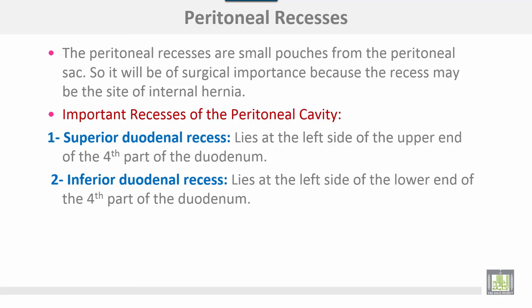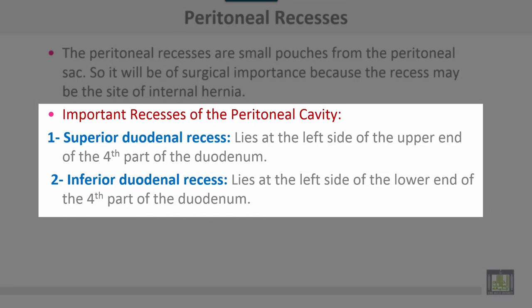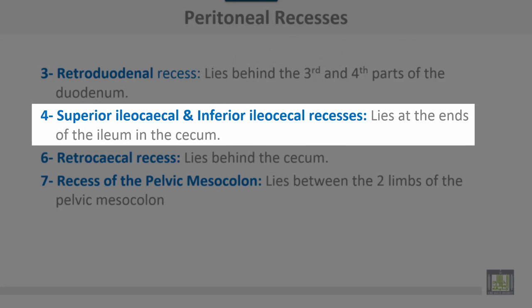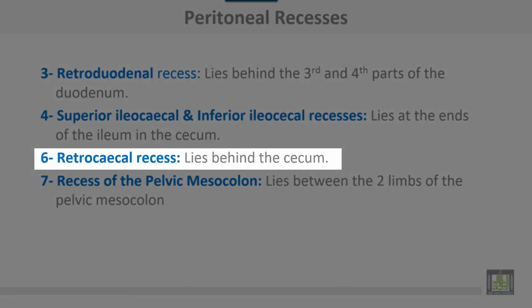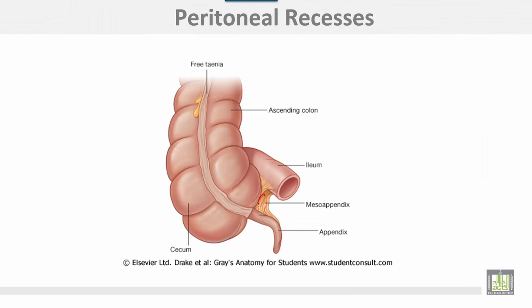Peritoneal recesses are small pouches from the peritoneal sac of surgical importance, because a recess may be the site of an internal hernia. Important recesses of the peritoneal cavity: the superior duodenal recess lies at the left side of the upper end of the fourth part of the duodenum; the inferior duodenal recess lies at the left side of the lower end of the fourth part of the duodenum; the retroduodenal recess lies behind the third and fourth parts of the duodenum; the superior and inferior ileocecal recesses lie at the end of the ileum and the cecum; the retrocecal recess lies behind the cecum; and the recesses of the pelvic mesocolon lie between the two limbs of the pelvic mesocolon.